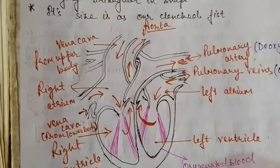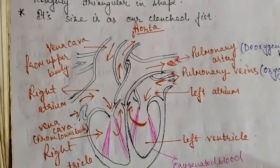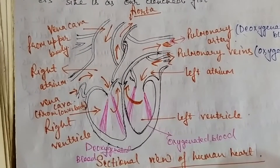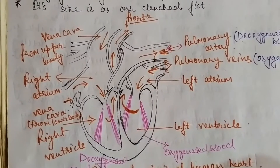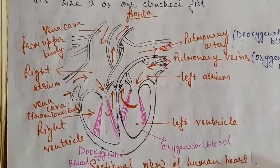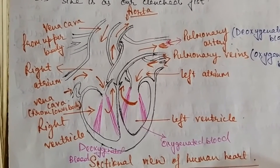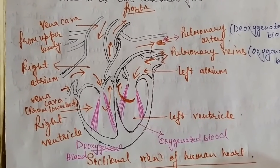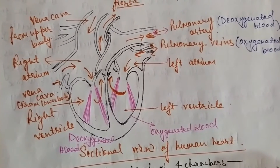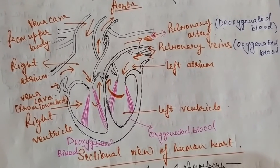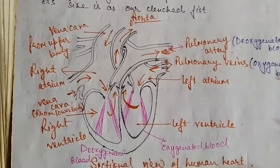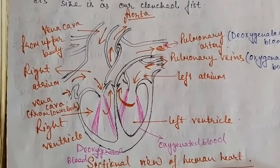Now let's know about the heart. The heart is roughly triangular in shape, as seen in the diagram. It is a muscular organ composed of cardiac muscles. It is the size of your clenched fist — the bigger the human being, the bigger the clenched fist, and similarly the bigger the size of the heart. It is a four-chambered heart.